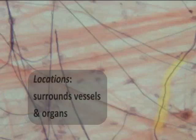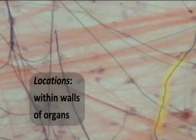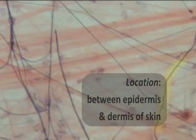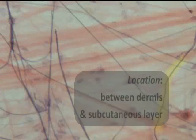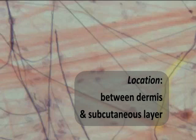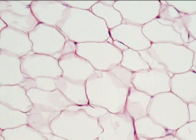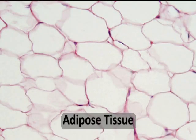It's found surrounding vessels, surrounding organs, within the body wall of organs in various layers. It's found within the skin between the epidermis and the dermis, as well as from the dermis to the subcutaneous layer, helping to bind the adipose fat, nerves, sensory receptors of the skin, and blood vessels together — acting as a passageway from the skin to the rest of the body.